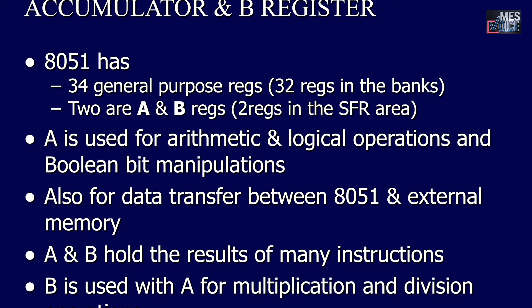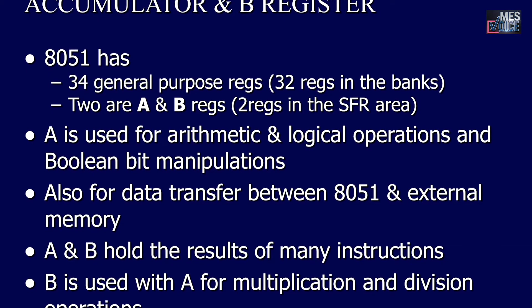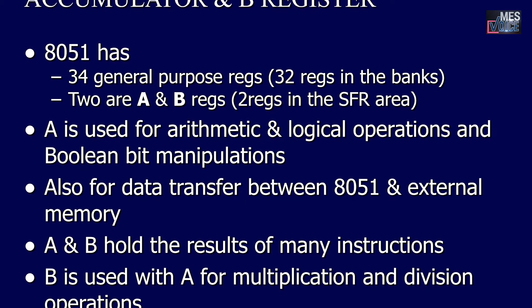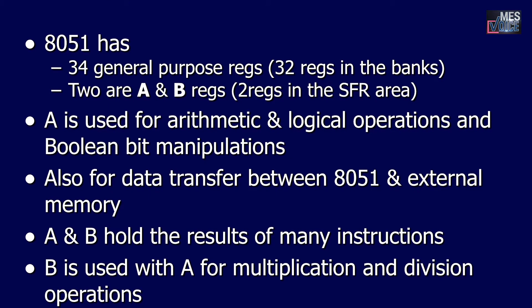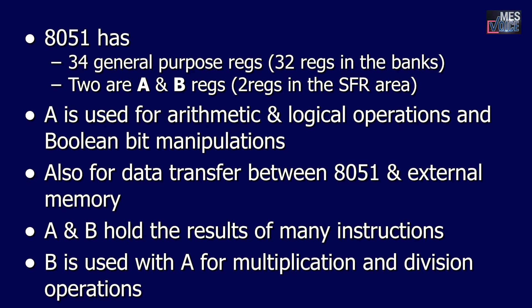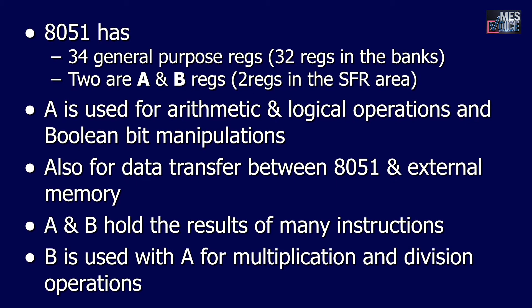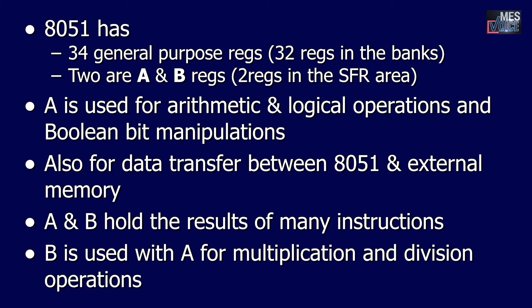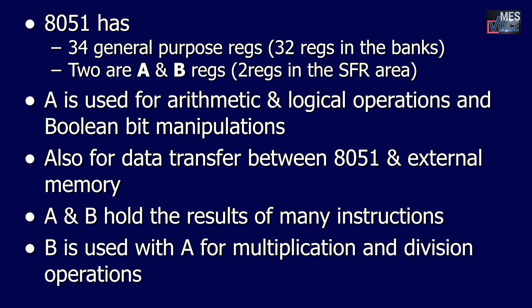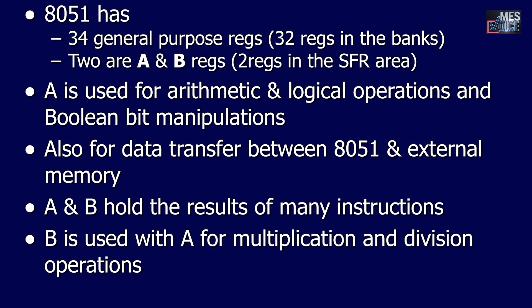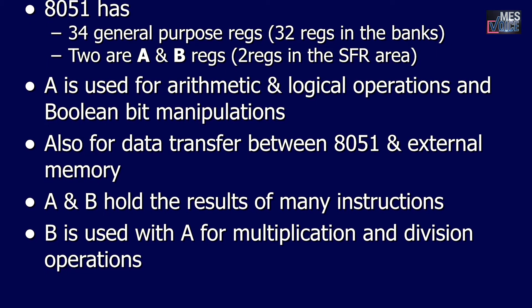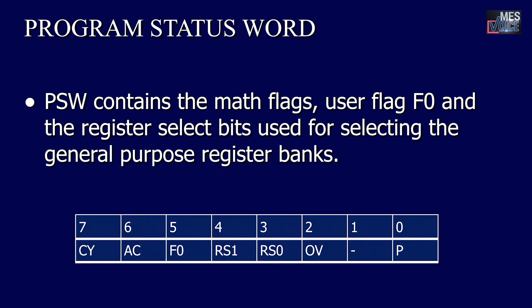The 8051 has 32 general purpose registers in the banks, plus an accumulator and B register in the special function register area. The accumulator is used for arithmetic and logical operations and boolean bit manipulations. It is also used for data transfer between the 8051 and external memory. A and B registers hold the results of many instructions. The B register is used with the accumulator for multiplication and division operations.